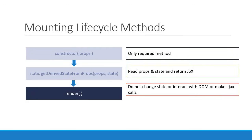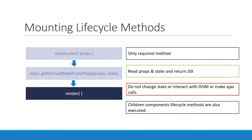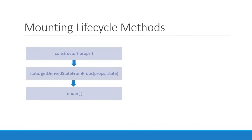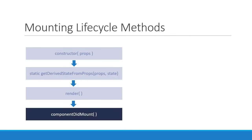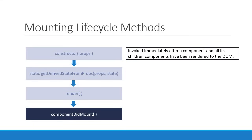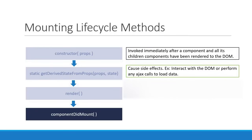Since the render method's JSX also contains the children components, right after the parent render method the children components' lifecycle methods are also executed. We will see this order of execution shortly in code. The final method which is part of the mounting phase is componentDidMount. This method will be called only once in the whole lifecycle of a given component and is invoked immediately after a component and all its children components have been rendered to the DOM. This method is the perfect place to cause side effects — you can interact with the DOM or perform any Ajax calls to load data.